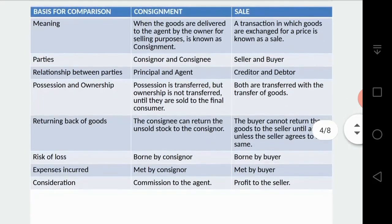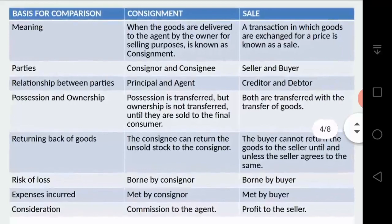Let's see how sale and consignment differ on a basis of comparison. Firstly, looking at their meanings — Consignment is when goods are delivered to the agent by the owner for selling purposes. In consignment, goods are simply delivered so that the agent can further sell them out. Sale, on the other hand, is a transaction in which goods are exchanged for a price.